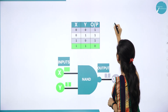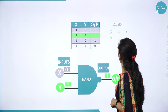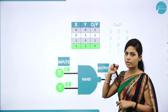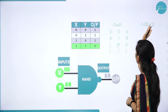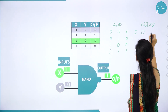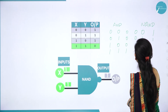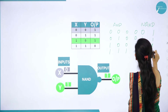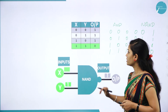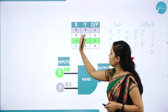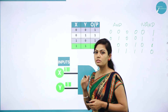For the NAND truth table: AND gate gives 0·0=0, 0·1=0, 1·0=0, 1·1=1. NAND is the complement of AND, so: 0·0 complemented = 1; 0·1 complemented = 1; 1·0 complemented = 1; 1·1 complemented = 0. So in NAND gate: inputs 0,0→1; 0,1→1; 1,0→1; 1,1→0.